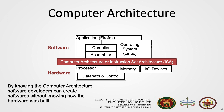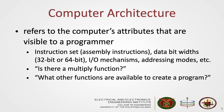So, what is a computer's architecture? Computer architecture refers to the computer's attributes that are visible to a programmer. This includes the assembly instructions, data bit words, IO mechanisms, addressing modes, and many more. Computer architecture answers the questions: is there a multiply function, or what other functions are available to create the program?